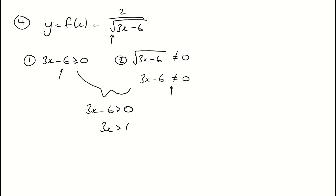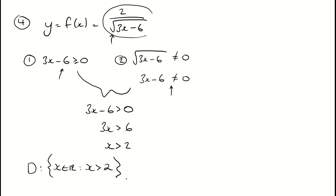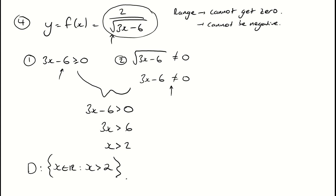Solving that inequality, x has to be greater than 2. So the domain is such that x is a real number where x is greater than 2. For the range, we definitely can't get a 0 out. We also can't get a negative number — to get a negative result we would need the denominator to be negative, but there's no way to make that denominator negative since square roots never return negative values. Therefore, the range is such that y is a real number where y is greater than 0: it cannot be 0 and it cannot be negative.